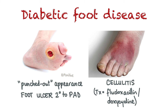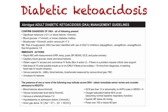Diabetic complications may sometimes present as an emergency, like DKA, HHS, or hypoglycemia. DKA is a complication of type 1 diabetes and it's diagnosed when there is hyperglycemia where the glucose is above 11, high serum ketones where the serum ketones are above 3, or ketones plus plus on urine dipstick, and either acidosis where the pH is less than 7.3, or low bicarbonate where the bicarbonate levels are less than 15 millimoles per litre.